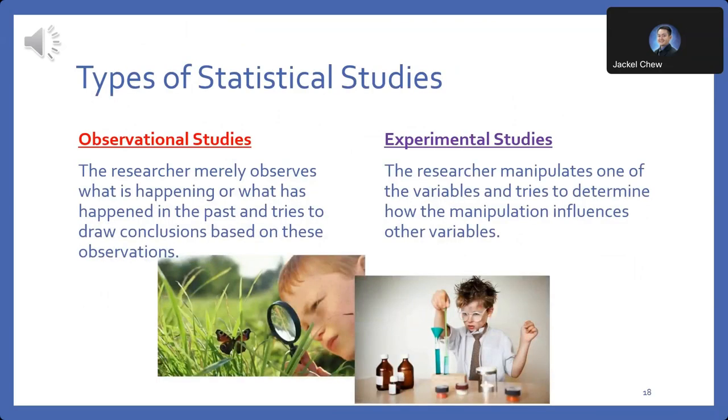Next, we will explore the types of statistical studies. There are two main categories: observational studies and experimental studies. In observational studies, the researcher passively observes phenomena without intervening or manipulating any variables. These studies focus on observing real-life situations or events as they naturally occur. Researchers draw conclusions based on these observations, but they cannot establish causal relationships as they can in experimental studies.